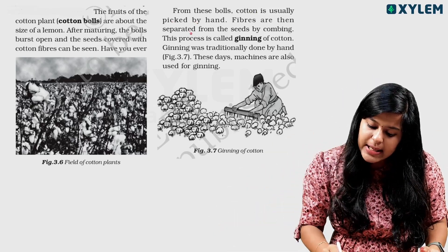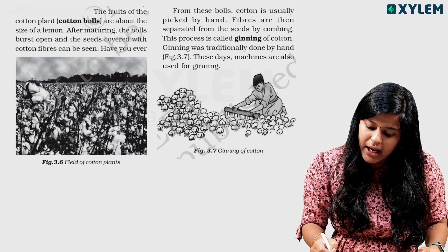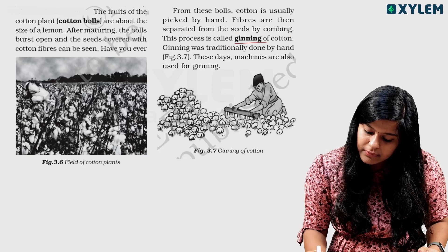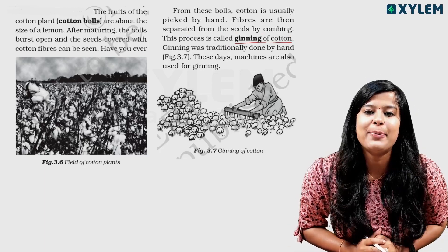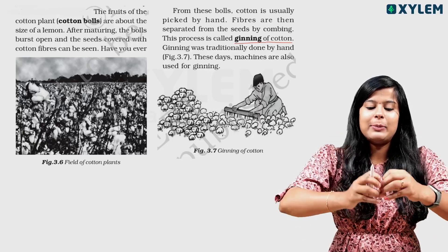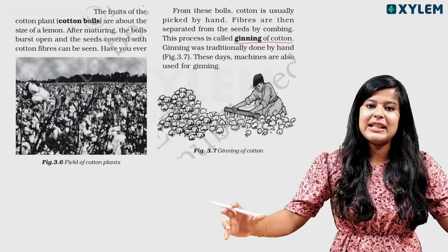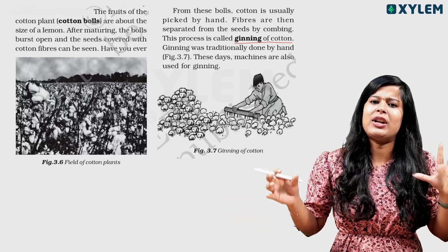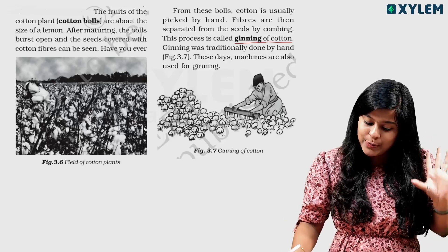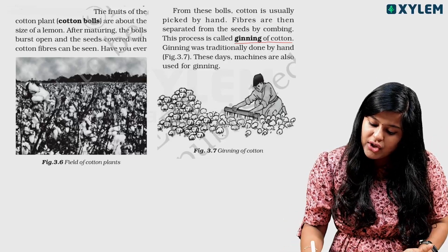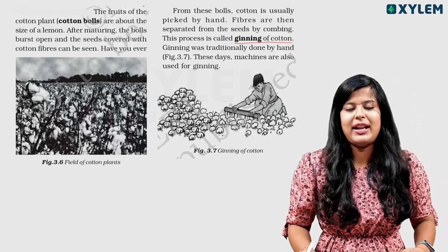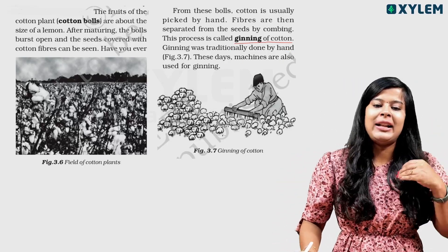Fibers are then separated from the seeds by combing. This process is called ginning of cotton. If we separate the fiber from the seeds, it is called ginning of cotton. Ginning was traditionally done by hand. These days, machines are also used for ginning.